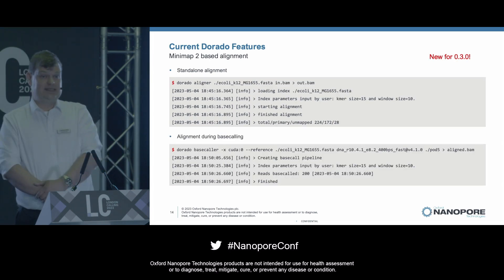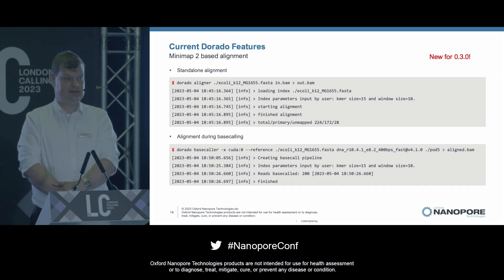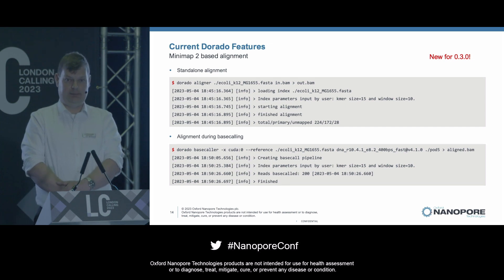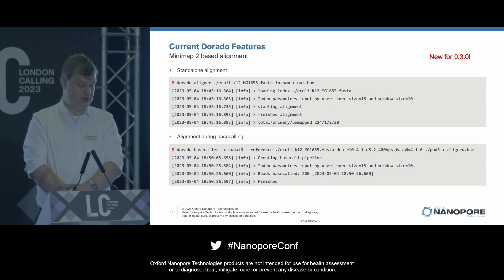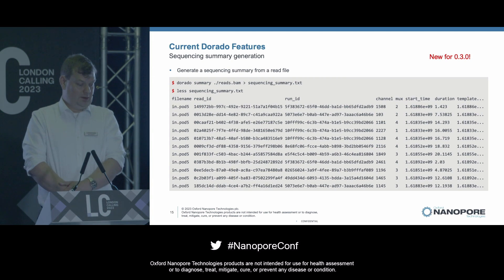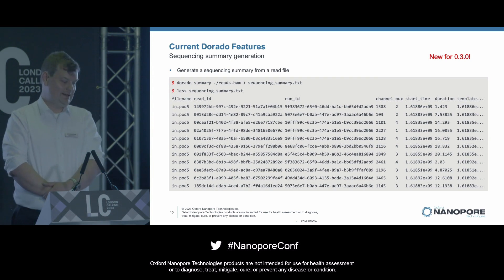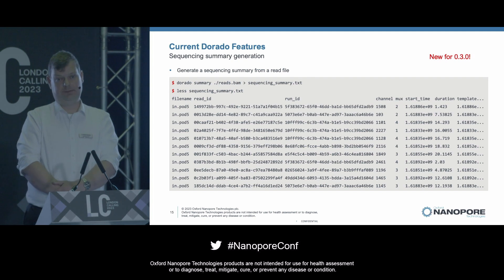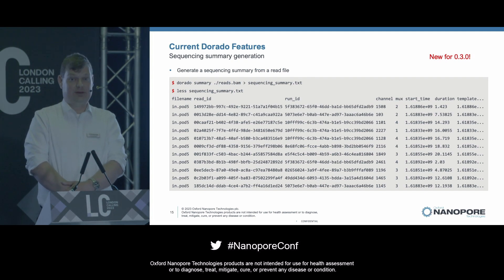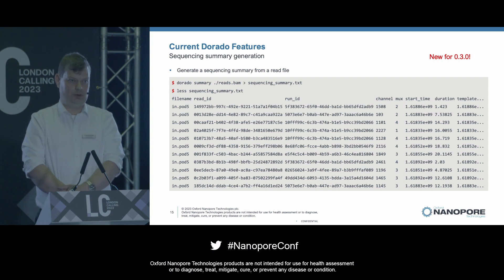Another new feature for 0.3 is alignment. We've got a standalone aligner command — you simply pass in a reference, pass in your base call reads, and it will pipe out aligned BAM files for you. If you want to do alignment when you do base calling, you can also just do both at the same time by passing the dash-dash reference argument to the base caller. We've also got a summary subcommand now. For people who need a sequencing summary file for downstream tools, you call Dorado summary, pass in your BAM file, and Dorado will create a sequencing summary text file with all the data you want.